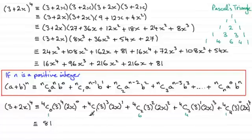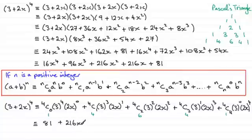For 4C1, we've seen it's 4. 3 cubed is 27; this is 2x. So 4 times 27 times 2x gives me 216x. Then 4C2 is 6, we've got 3 squared which is 9, and this is going to be 4x squared. So 6 times 9 times 4x squared gives me 216x squared.